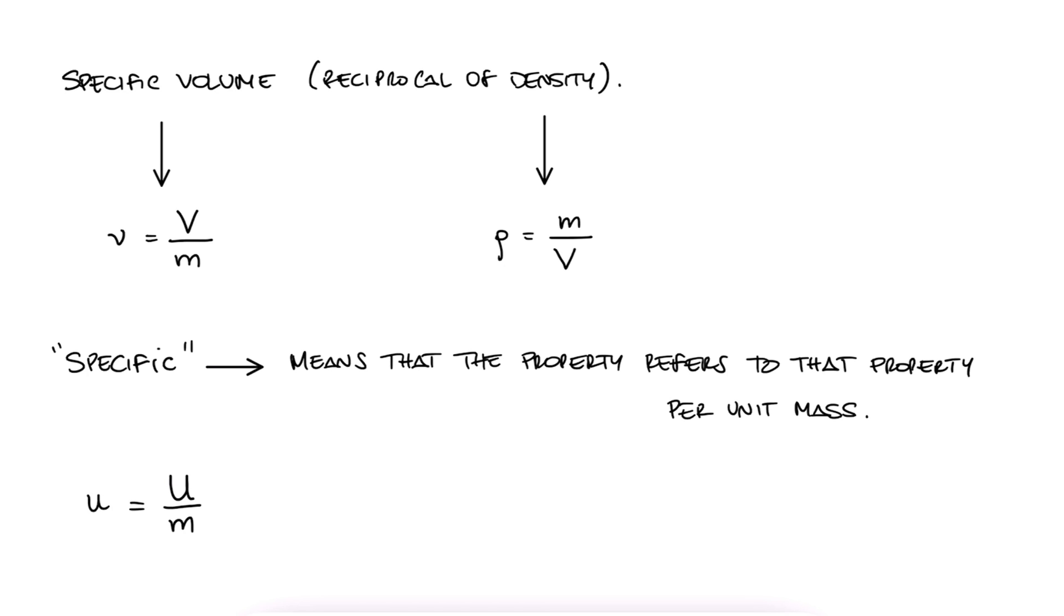Of course, specific properties will therefore be an intensive property, and again, in thermo, we use lowercase letters for the variables of specific properties. For instance, capital V is volume in cubic meters, and lowercase v is specific volume in cubic meters per kilogram, or per unit mass.